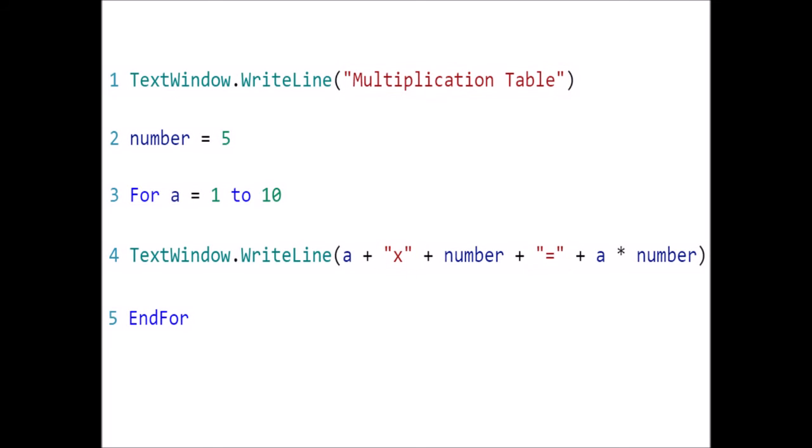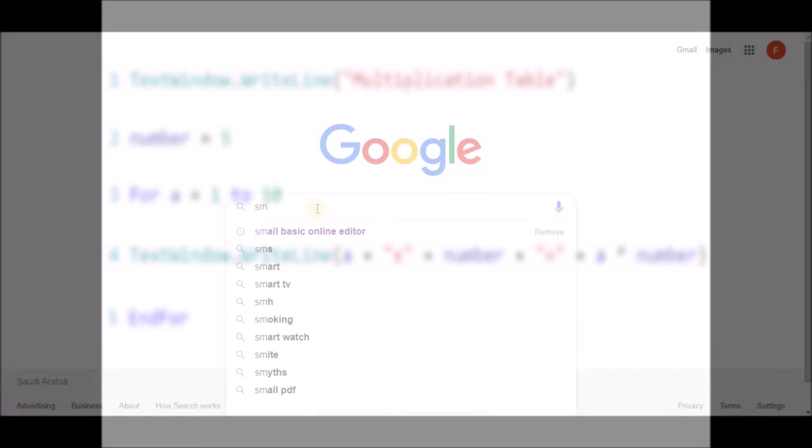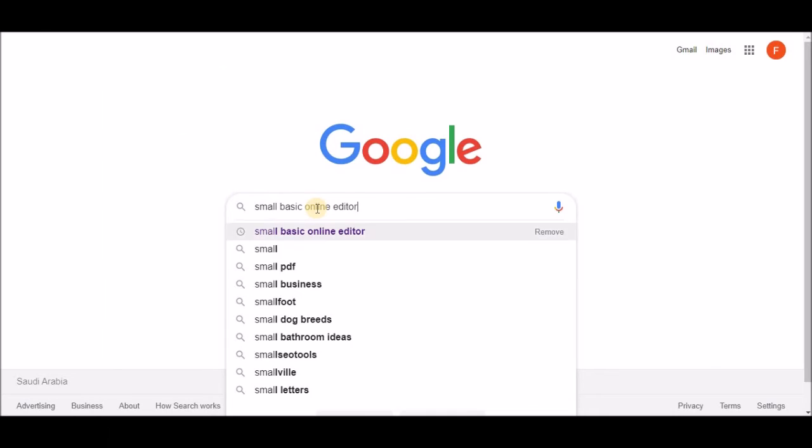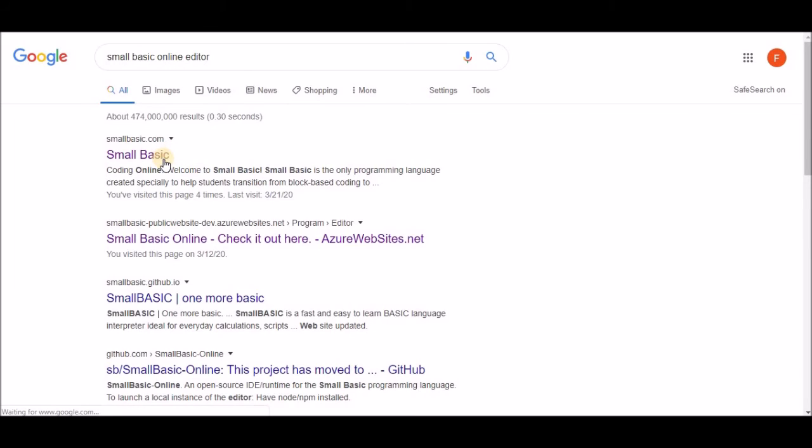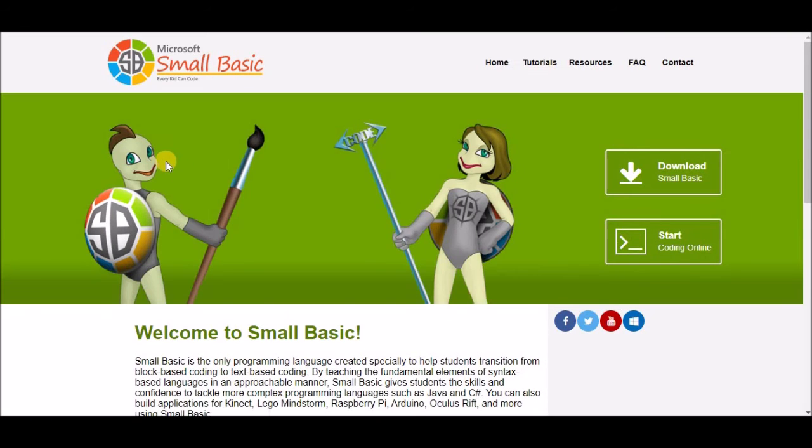Now let's write these codes in the Small Basic online editor. So let's get started. Search on Google for Small Basic online editor. Click on this link which shows smallbasic.com. Click on start coding online.